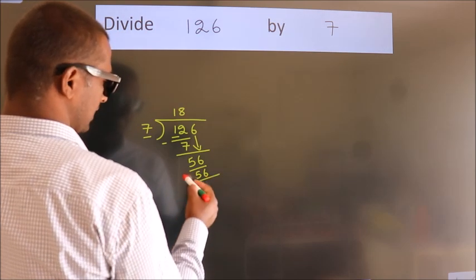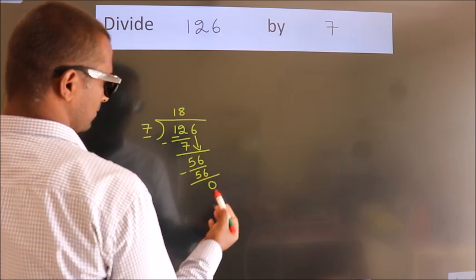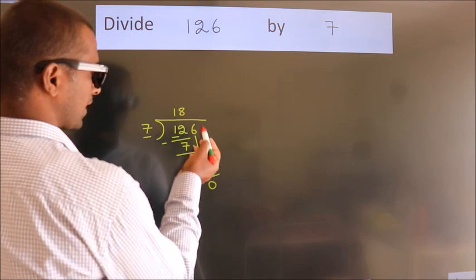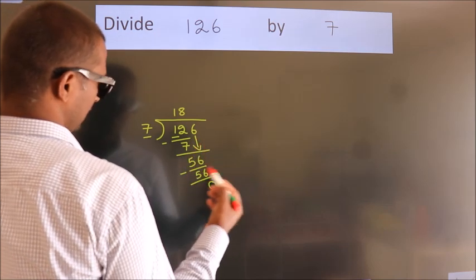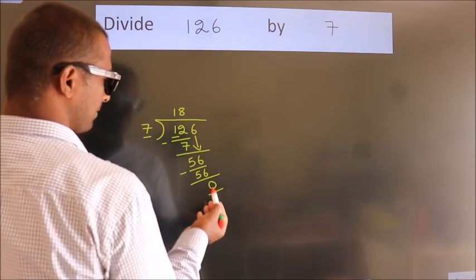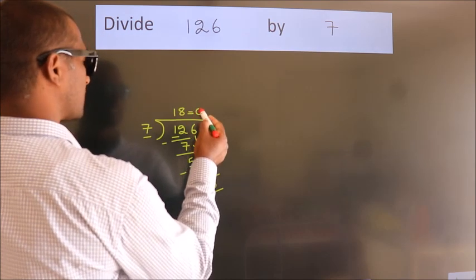Now we subtract. We get 0. After this, no more numbers to bring down and we got remainder 0. So this is our quotient.